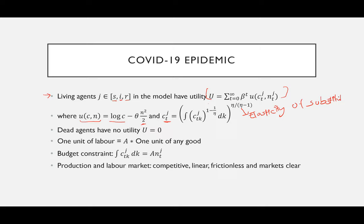Along with the susceptible, infected, and recovered populations, we also have one more population: the dead population. The dead population doesn't have any utility, so the utility is equal to zero.